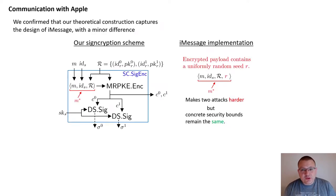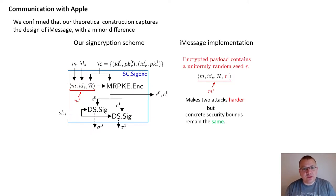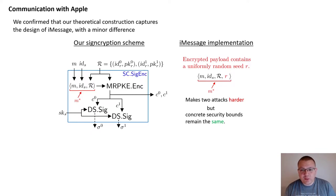We confirmed with Apple that our signcryption scheme captures the design of iMessage with one minor but important difference. In our model, the payload M* encrypted by MRPKE contains the plaintext message, the sender's identity, and the set of recipient identities and public keys. In the actual implementation, this payload also includes a uniformly random nonce. This makes two of the three attacks we present less efficient than claimed. However, the third attack is not affected, and as a result our overall security bounds still remain the same.